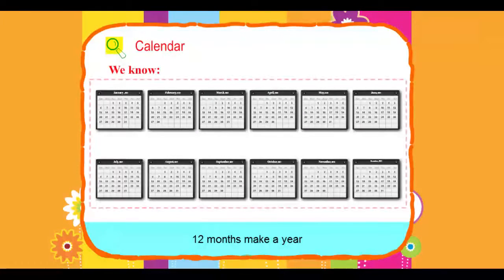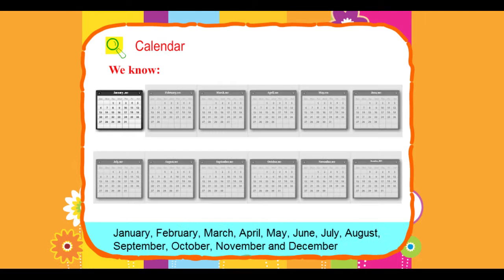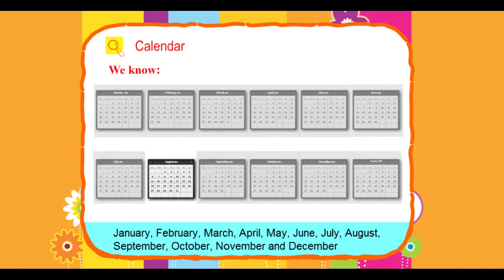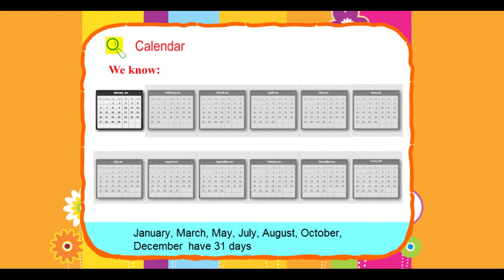12 months make a year. The names of the months are January, February, March, April, May, June, July, August, September, October, November and December.